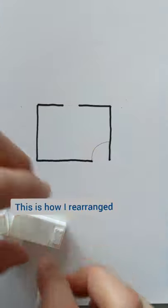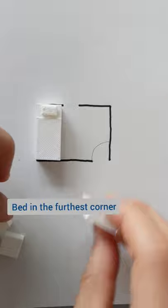So the trick is to put the biggest thing, which is the bed, in the furthest corner, leaving a nice big open space.